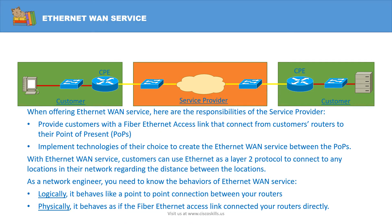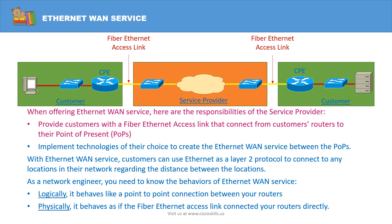Let's now look into this diagram. It is a typical Ethernet WAN that connects two locations of a customer. When offering Ethernet WAN service, the service provider has the following responsibilities: they need to provide customers with a fiber Ethernet access link that connects from the customer's router to their point of presence — basically the point of presence or fiber switches. Then they need to implement technologies of their choice to create the Ethernet WAN service between the points of presence.